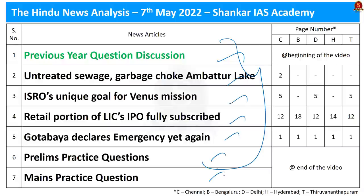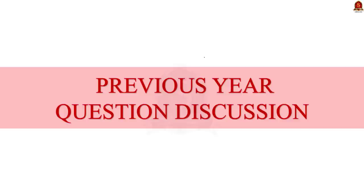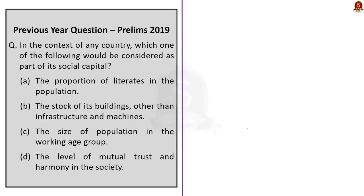Let's start our discussion with this previous year preliminary question. Now look at this question. This was asked in the preliminary examination 2019. In the context of any country, which one of the following would be considered as part of its social capital? Option A: